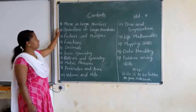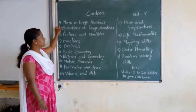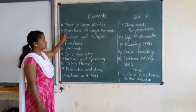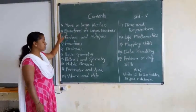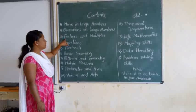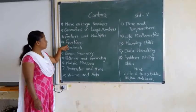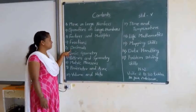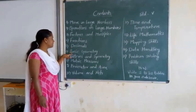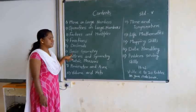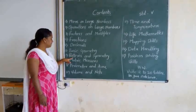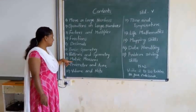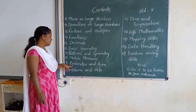The first unit is more on large numbers. Second one is operations on large numbers. Third one is factors and multiples. Fourth one is fractions. Fifth one is decimals. Sixth one is basic geometry. Seventh one is patterns and symmetry.